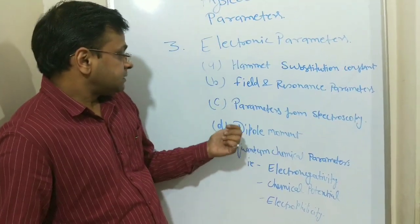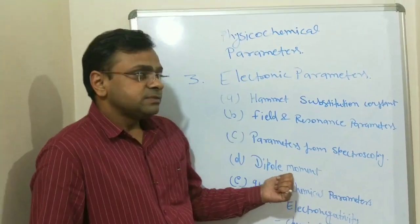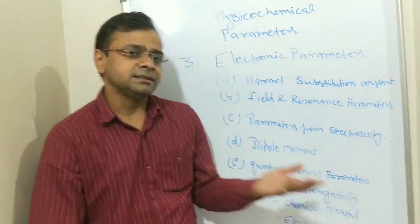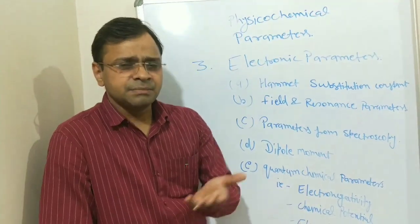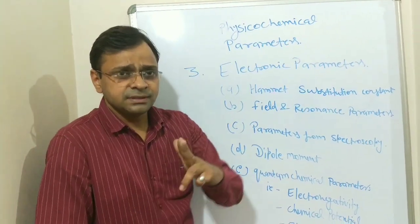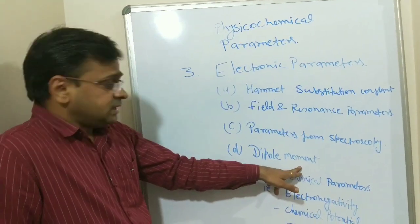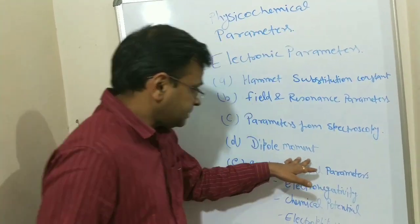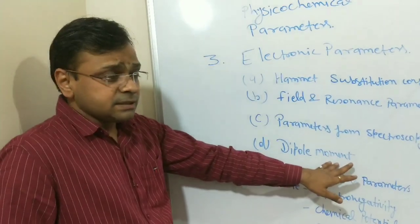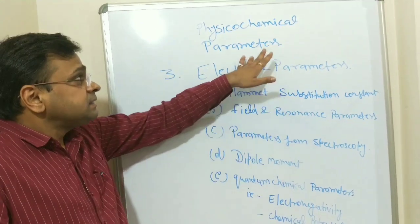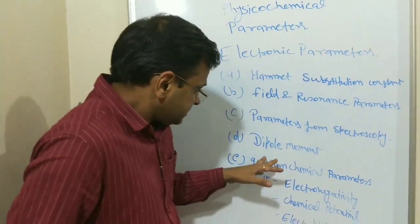Next one is dipole moment. Dipole moment, suppose we take the example of HCl molecule: H is positive and Cl is highly negative, and when they are placed in a capacitor, they rotate themselves. I am not going to calculate or estimate the dipole moment right now, but dipole moment of any substance has a great role as a physicochemical parameter in QSAR studies.